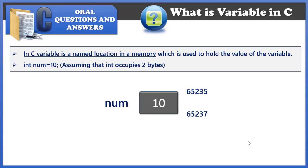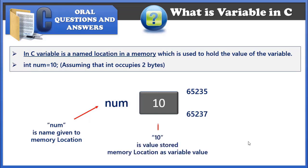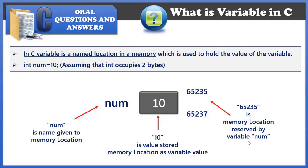These two bytes have been named as num. Here, num is the name given to the memory location, 10 is the value stored in that memory location, and 65235 is the memory address reserved for num.